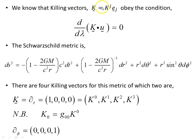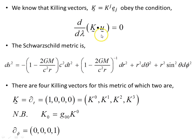We know that Killing vectors k obey the condition that the derivative with respect to the variable with which the tangent vector is parameterized goes to zero — so this object, d/dλ, is zero.